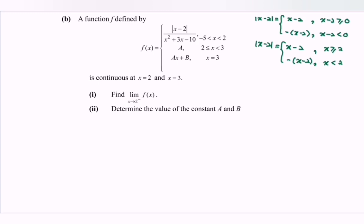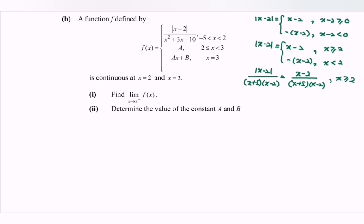Notice that the function is |x − 2| divided by the denominator, which can be factorized as (x + 5)(x − 2). So the function simplifies to (x − 2) / [(x + 5)(x − 2)] when x ≥ 2, and −(x − 2) / [(x + 5)(x − 2)] when x < 2.